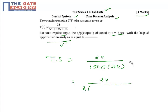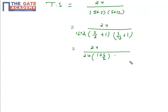Take 2 common, then take 12 common to convert to time constant form. So it will be 24 upon 24 times (1 + s/2) times (1 + s/12), which simplifies to 1 over (1 + s/2)(1 + s/12).